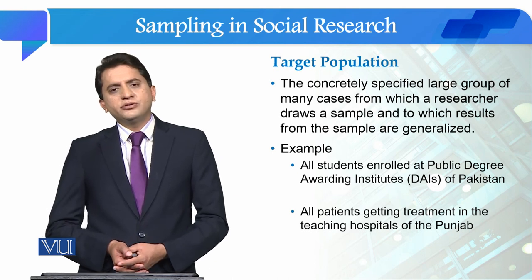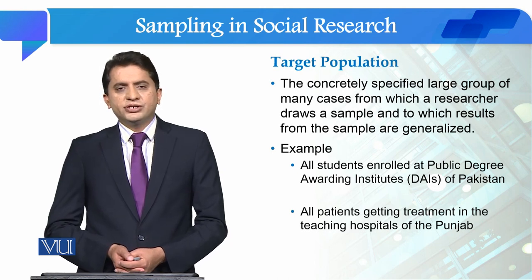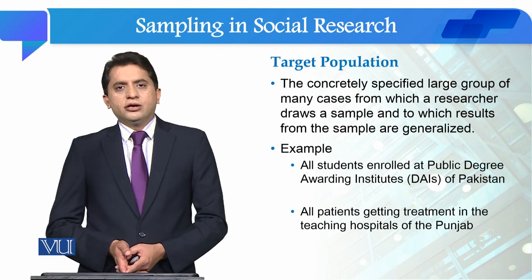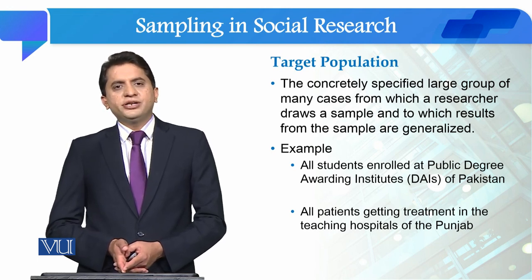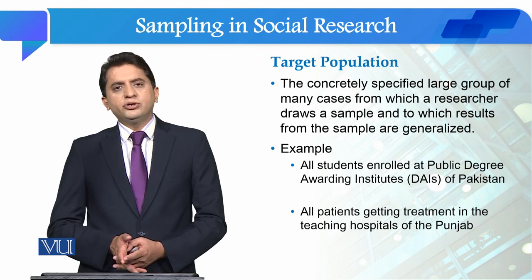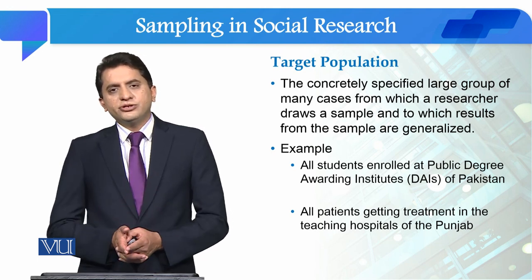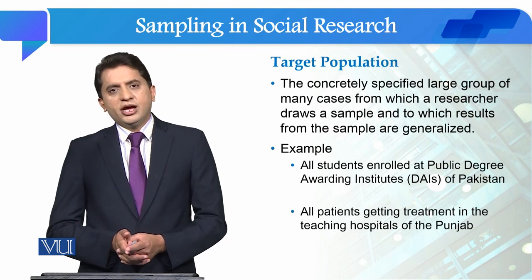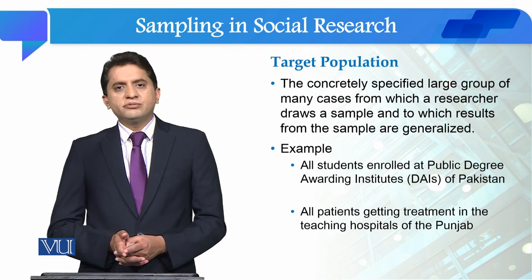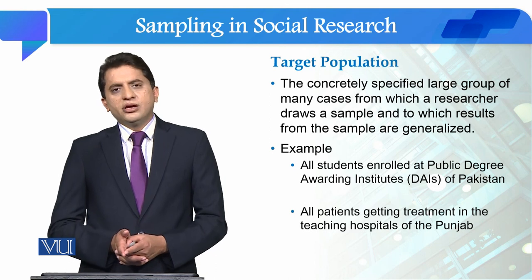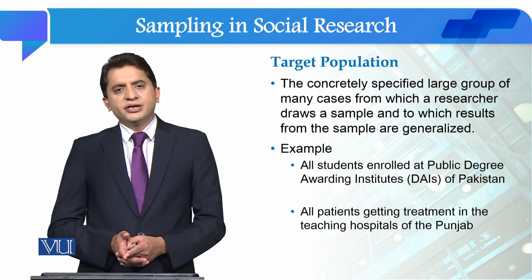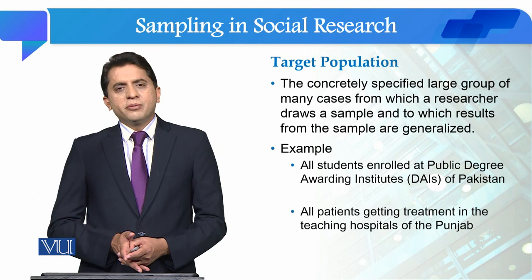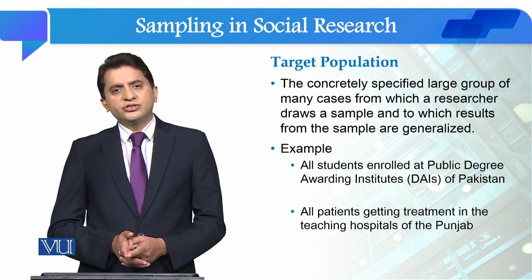After population, a sub-concept is targeted population — the population which I want to study as a researcher. For instance, all those students who are enrolled in degree awarding institutes in Pakistan is the population of the study. But within this population, what is my target population? If I am interested to study the students enrolled in Lahore — all graduate students studying in the universities of Lahore — then my targeted population is all those students who study in Lahore.